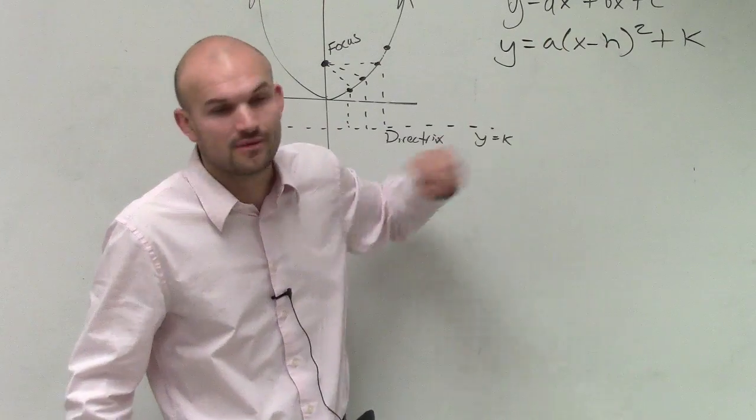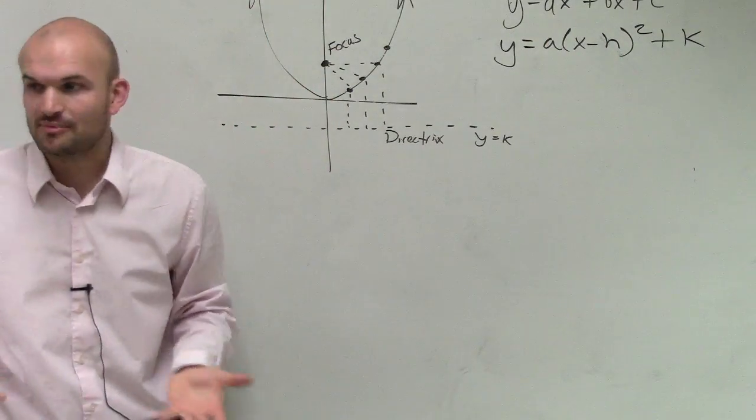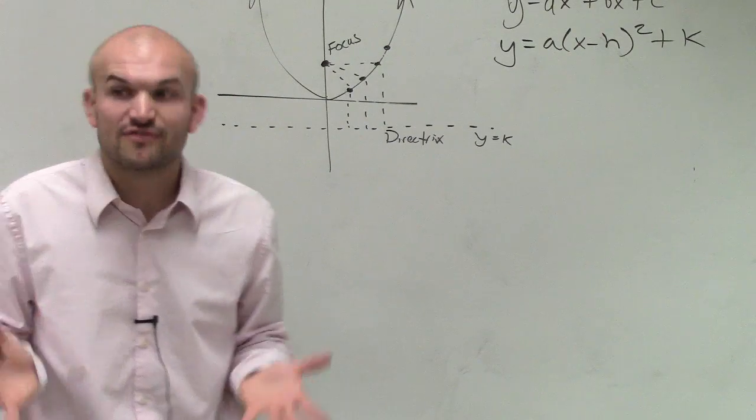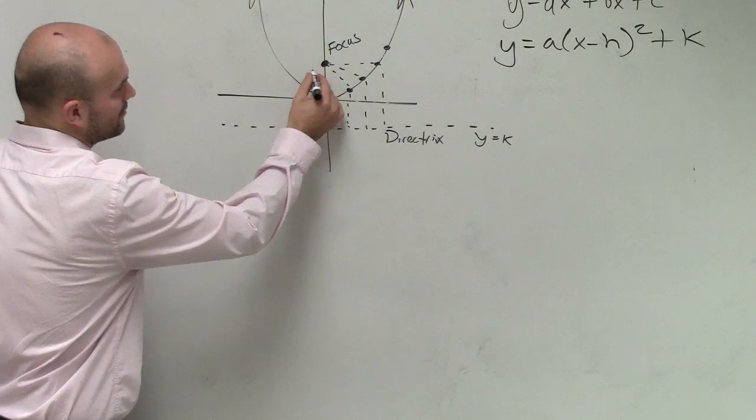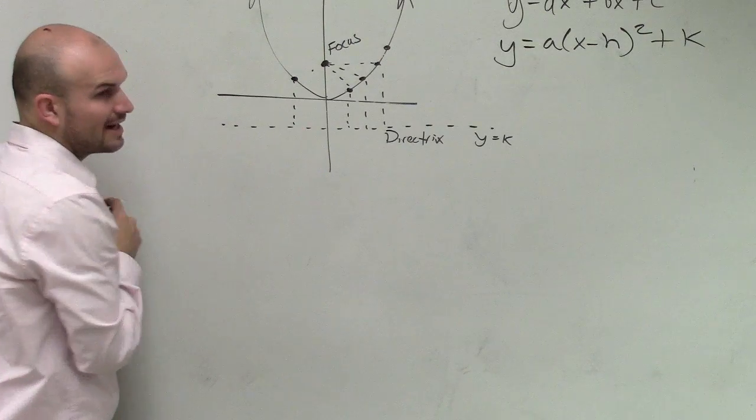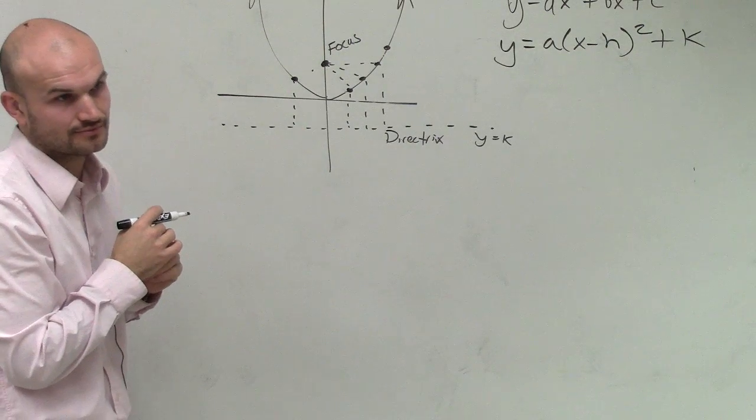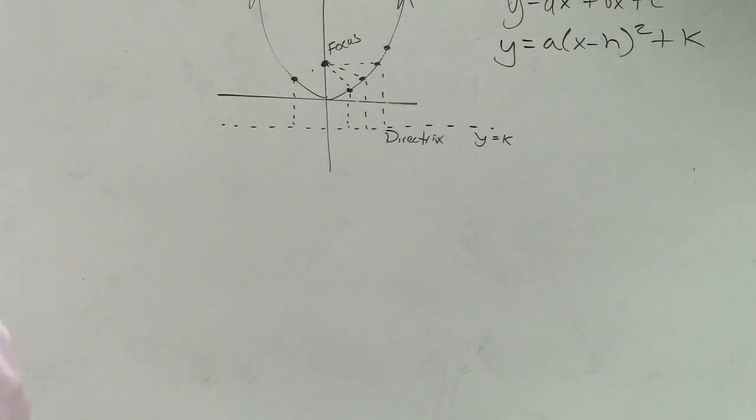Rather than saying a parabola comes in this format, it comes in this form, or this equation, the definition of a parabola that is going to be sufficient for all parabolas is set of points that are equidistant from the focus and a line, your directrix. So we'll get into the formulas here in just a second. But if you guys can just write that down.